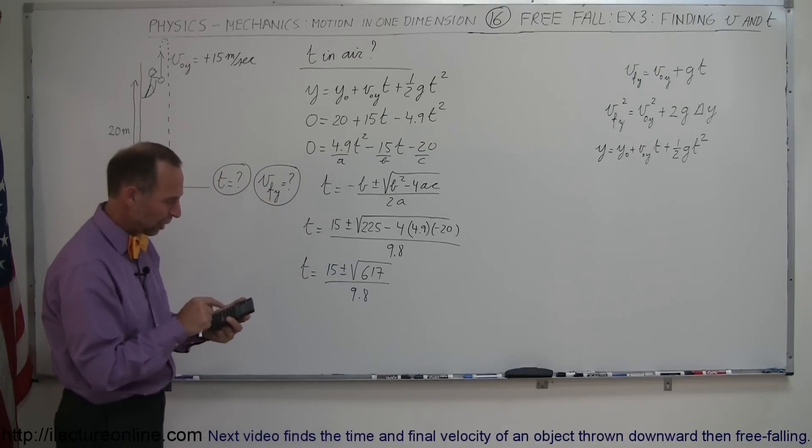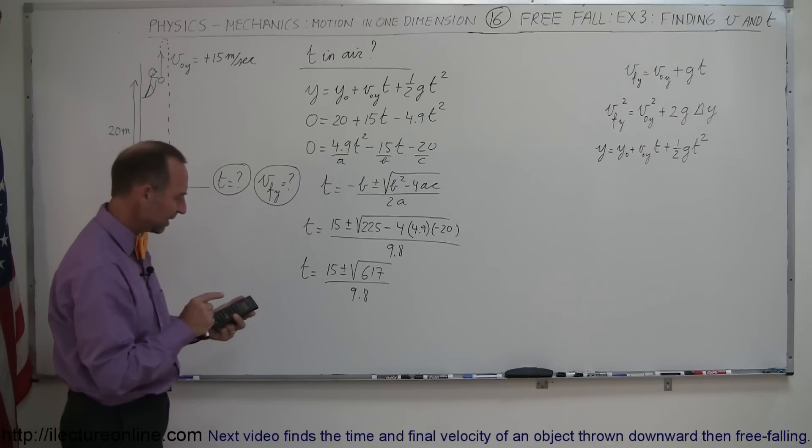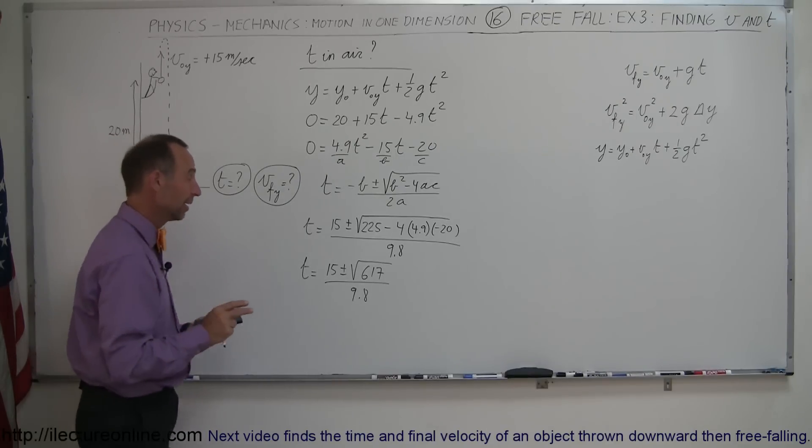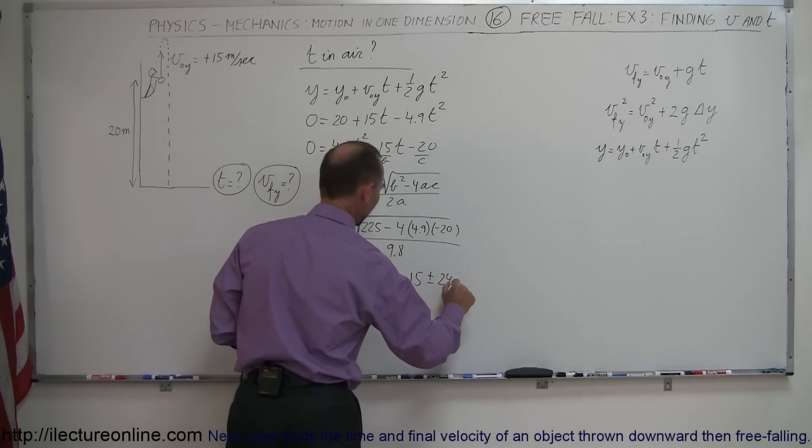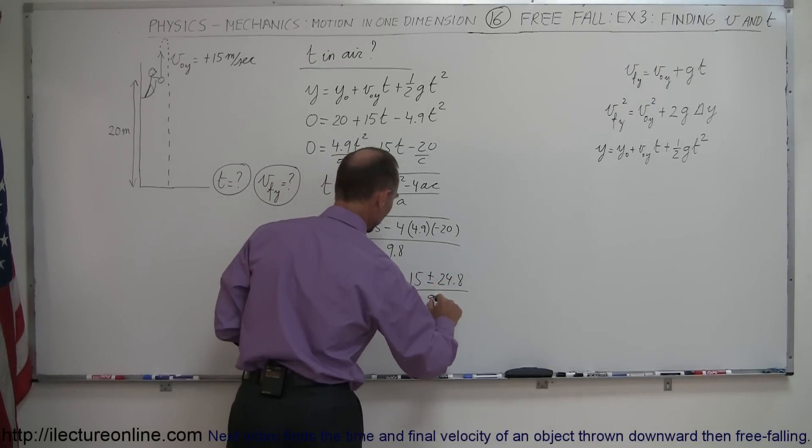So if you take the square root of 617 that gives me 24.8, so that would be 15 plus or minus 24.8 divided by 9.8.